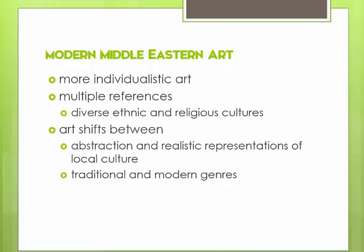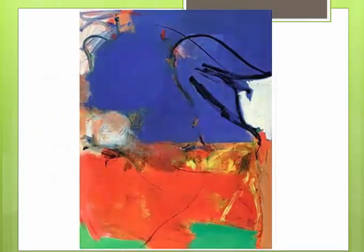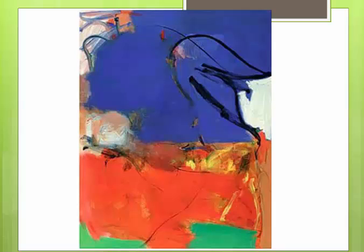Let's take a look at some examples. Here's one example of a purely abstract painting from a Middle Eastern artist. Rather than naming every artist, let's focus on the artistic properties. This work is purely abstract — a celebration of color with movement — a thoroughly modern artistic genre.